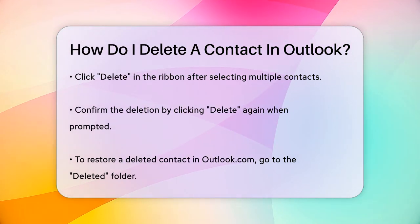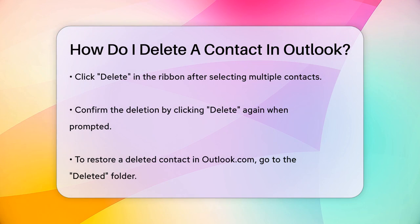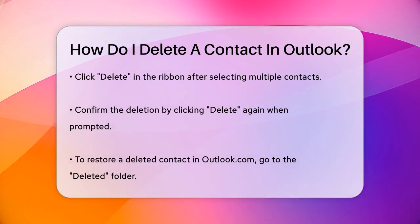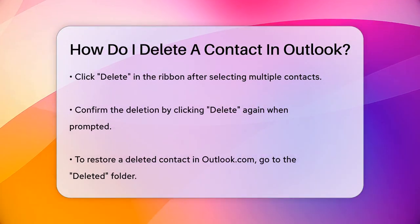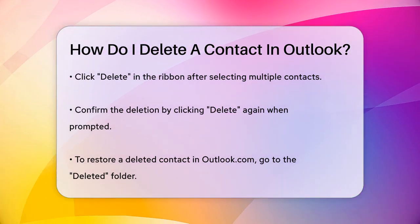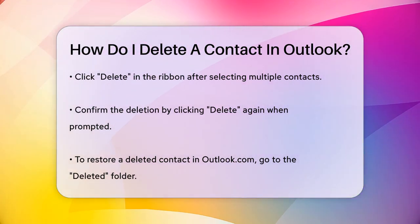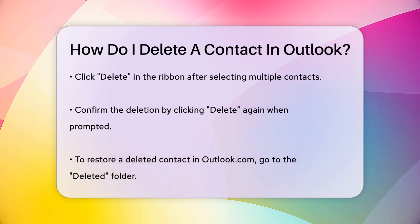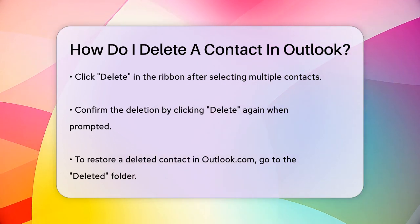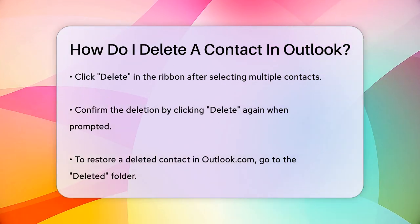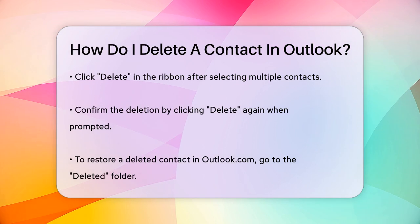If you realize you made a mistake, you can restore the deleted contact in Outlook.com. To do this, go to the Deleted folder under My Contacts, select the contact you want to restore, and then choose Restore from the main pane.